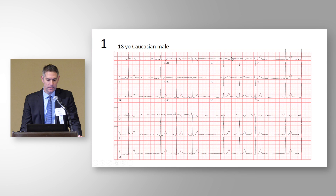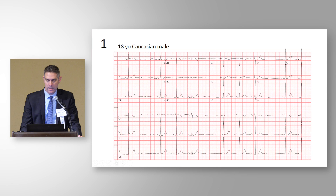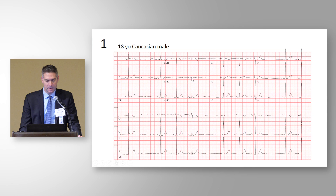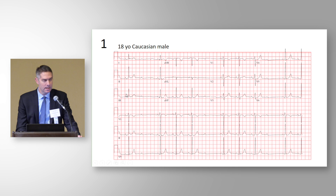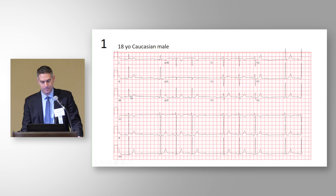My eyes start in the precordial leads, looking at V1. I'm looking for pathologic Q waves, ST segment depression, or T wave inversion — T wave inversion in V1 is always considered normal. I walk down through the precordial leads, then come over to the inferior leads, looking at AVF, up to AVL, over to lead two and up to lead one. I don't focus much on lead three because we don't look for Q waves or T wave inversion there.